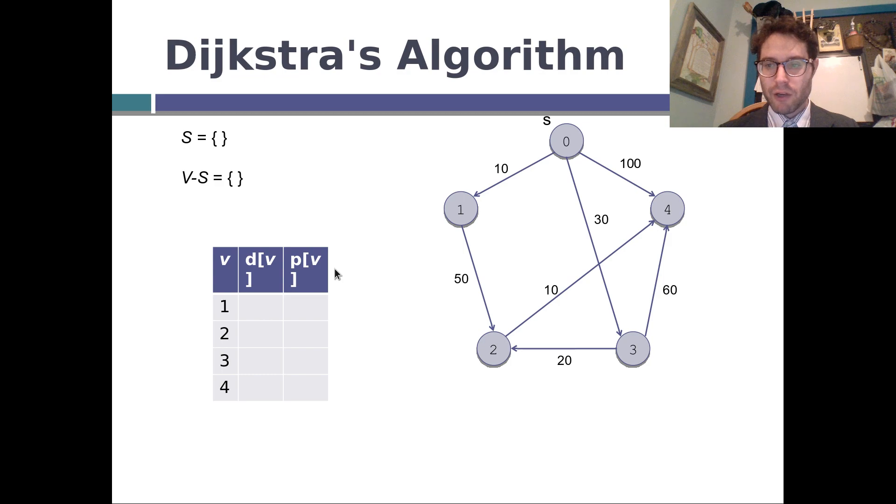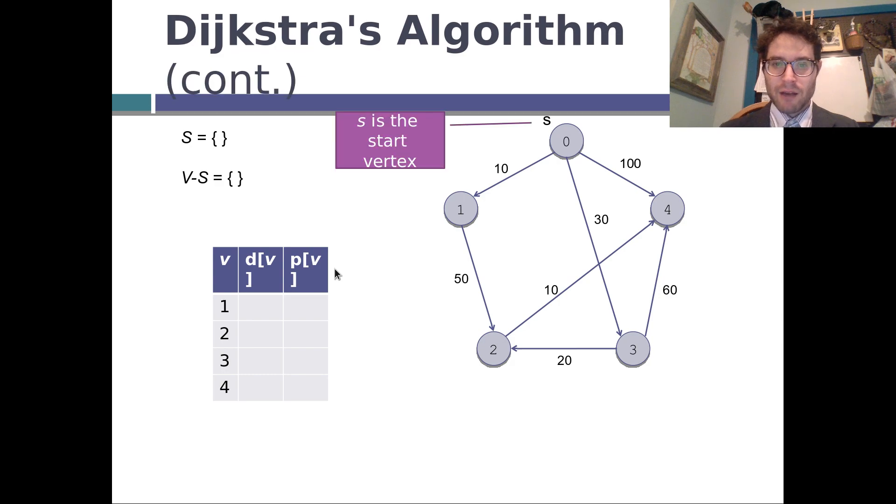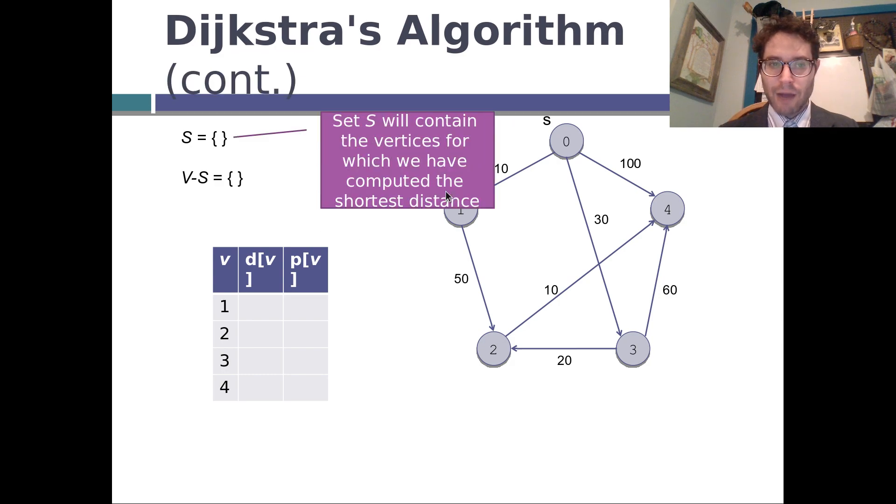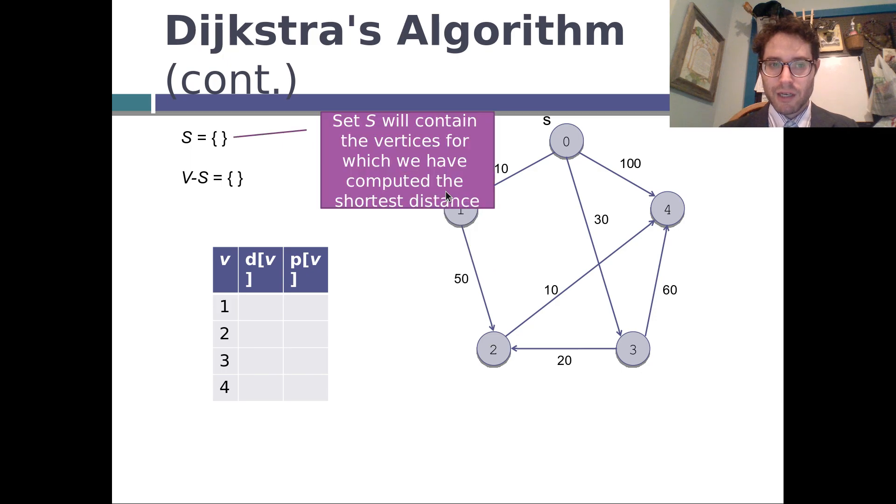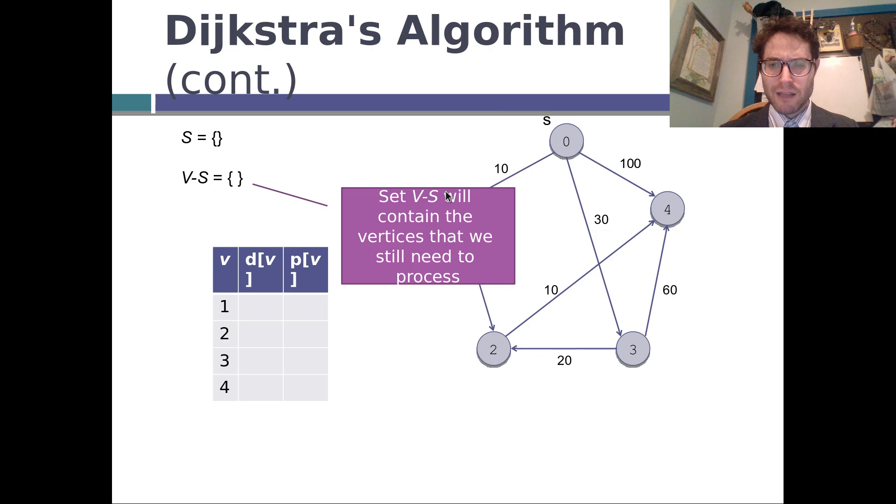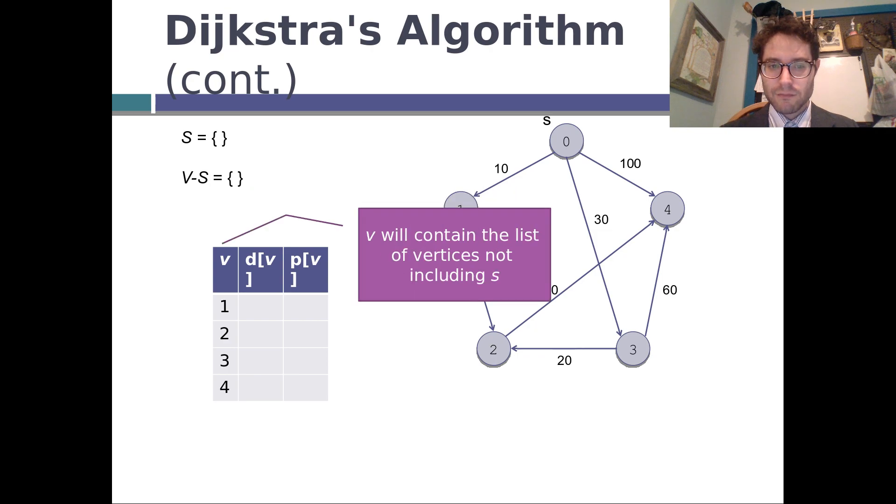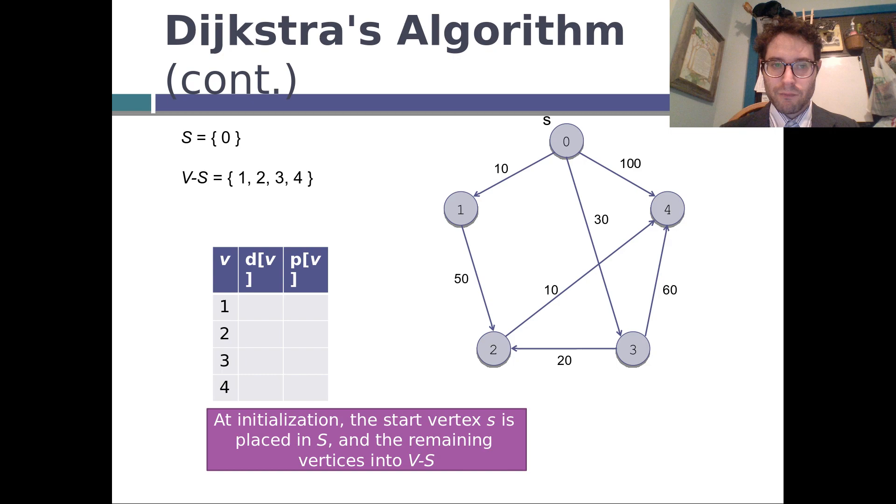So we're going to go, so the first step of Dijkstra is to initialize everything. So the first thing we do is that, well, S is the start vertex. We know how to get there. We just don't go anywhere. So we put it in the done set. And then we take everything else, all the other nodes, and put them in to-do. So take our start vertex, put it in here, put everything else in to-do.